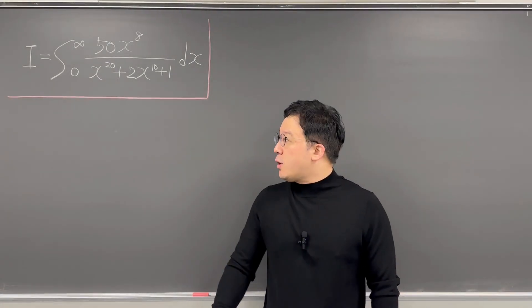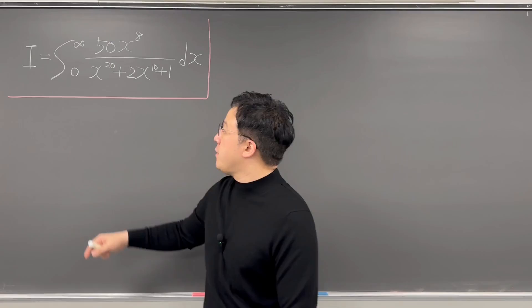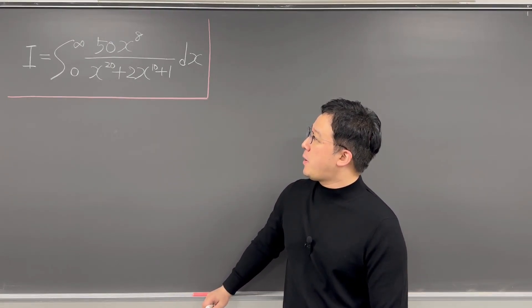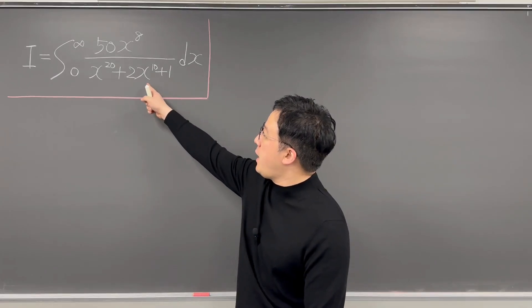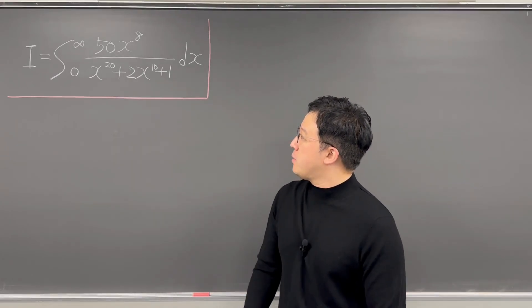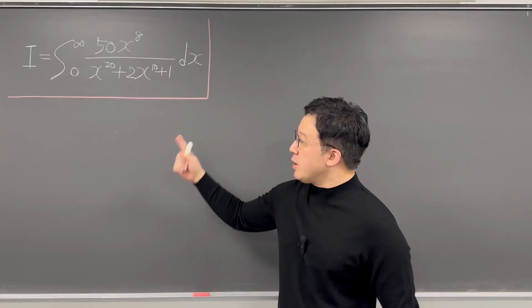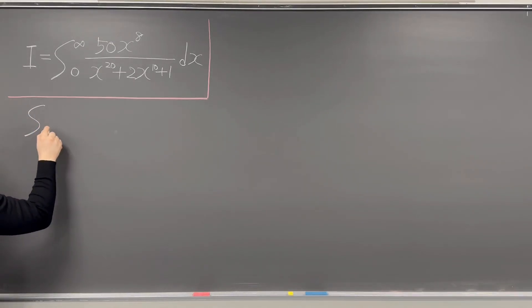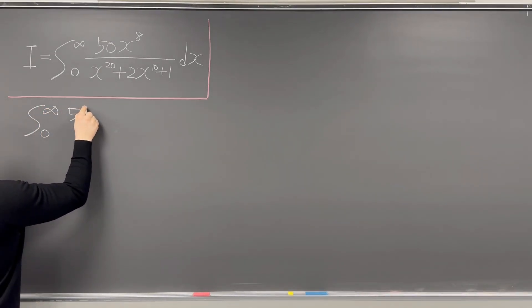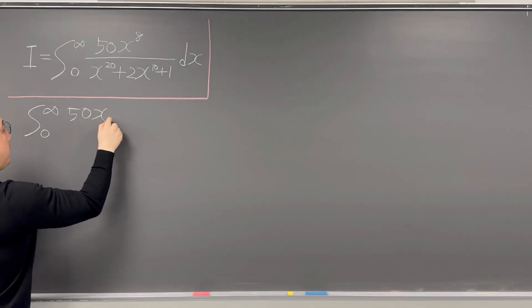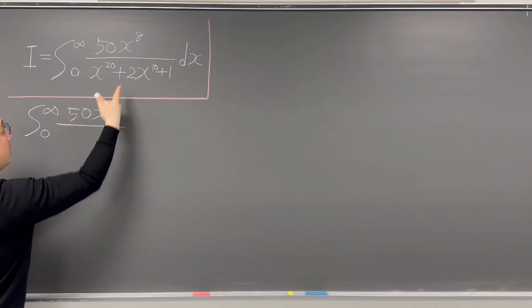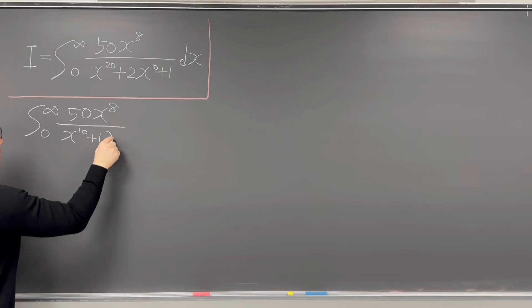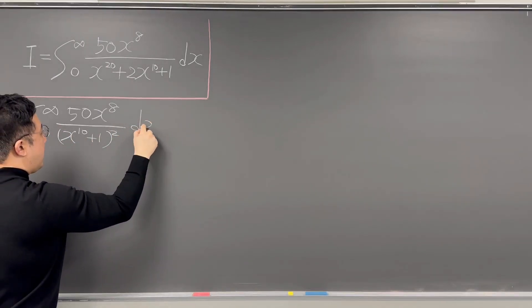Okay, here's the question. Evaluate this integral from zero to infinity. Then we have 50 times x to the power of 8 over x to the power of 20 plus 2 times x to the power of 10 plus 1, and dx. So we can work on the denominator. We have now integral from zero to infinity of 50 times x to the power of 8, and your denominator is the perfect square, which is x to the power of 10 plus 1, squared, and dx.